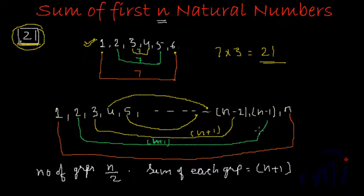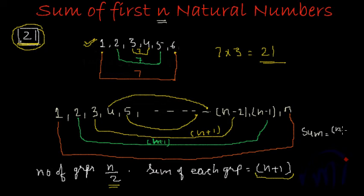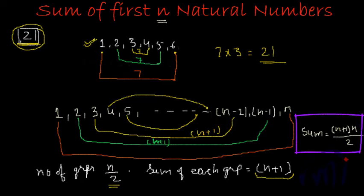In each group we get the same sum. If n is an even number, the number of groups will be n by 2, and the sum of each group is n plus 1. So the total sum of the series will be n plus 1 multiplied by n by 2. This is the formula to find the sum of first n natural numbers. We had a doubt about when the number of terms is odd, which we will now address.